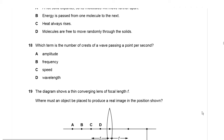This question is from October/November 18, variant 1, question number 18. Which term is the number of crests of a wave passing a point per second? You must have studied different terms related to waves. The number of wave cycles per second is known as the frequency. The number of crests of a wave passing a point per second is the same thing, so it must be frequency — option B.